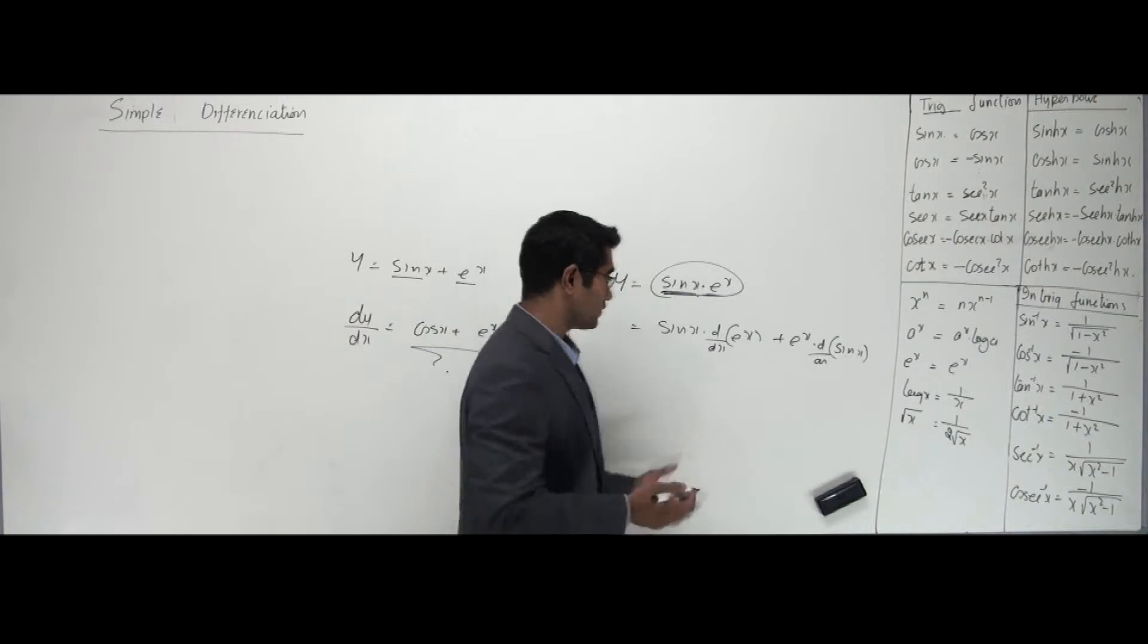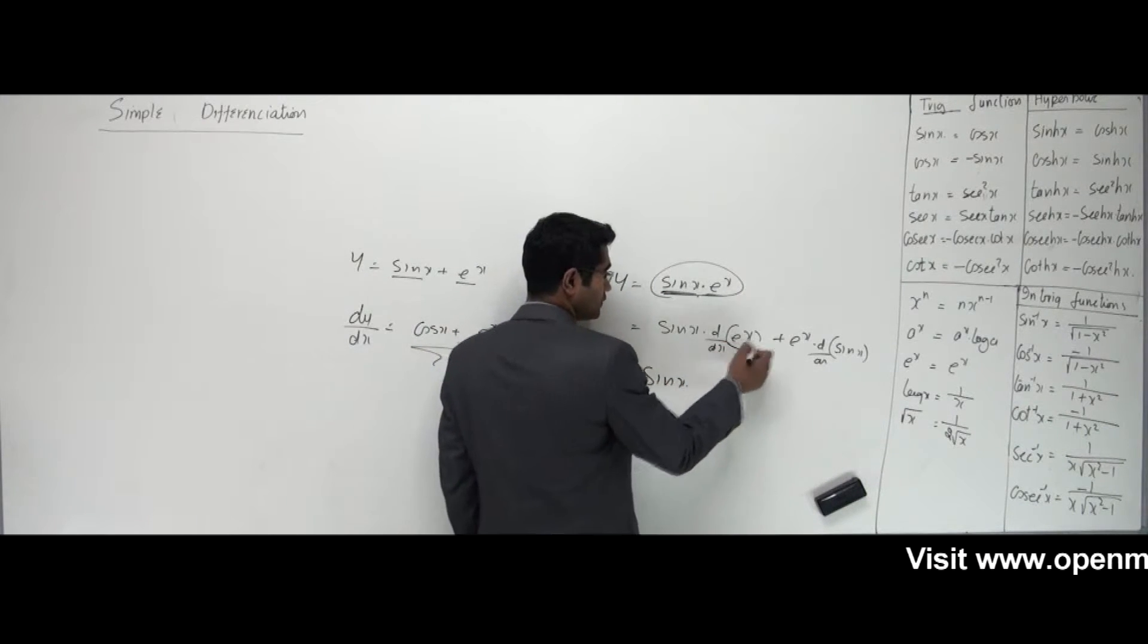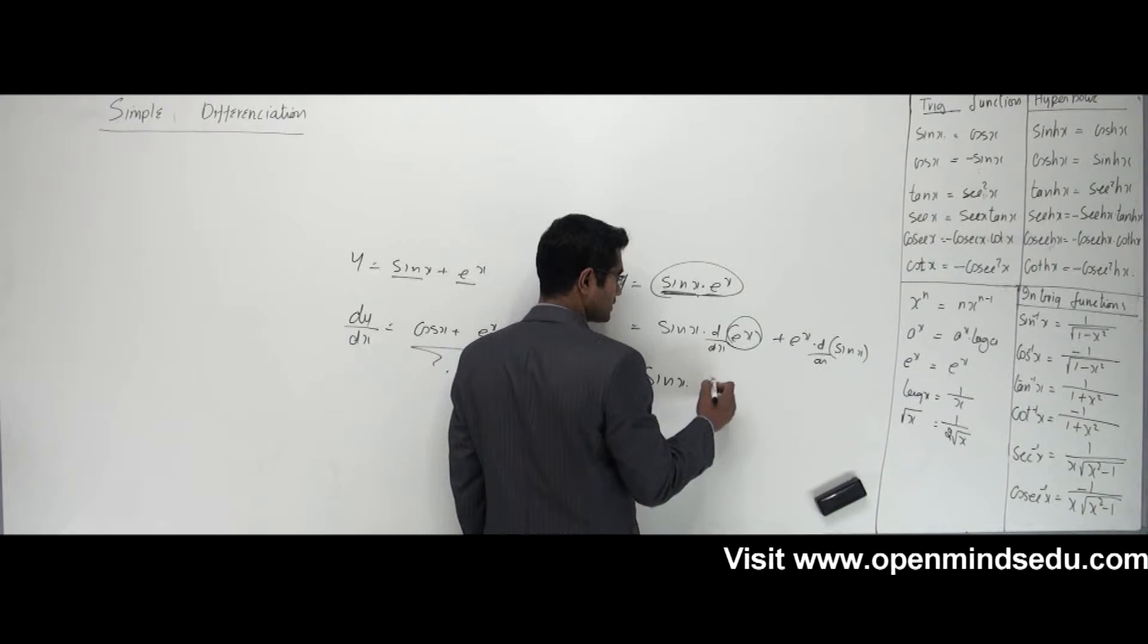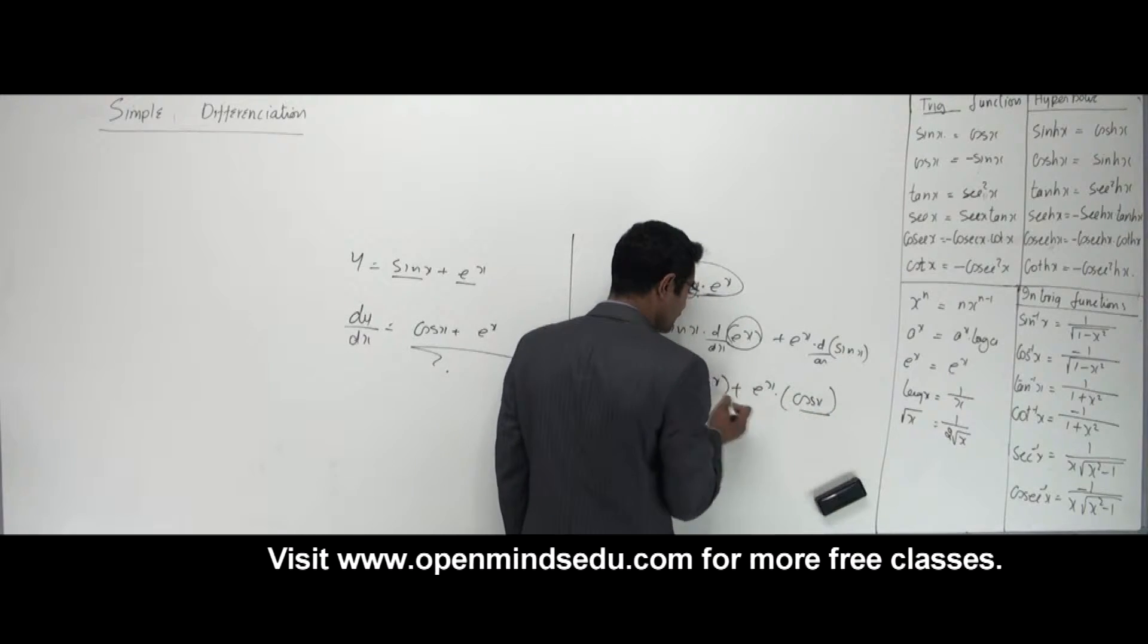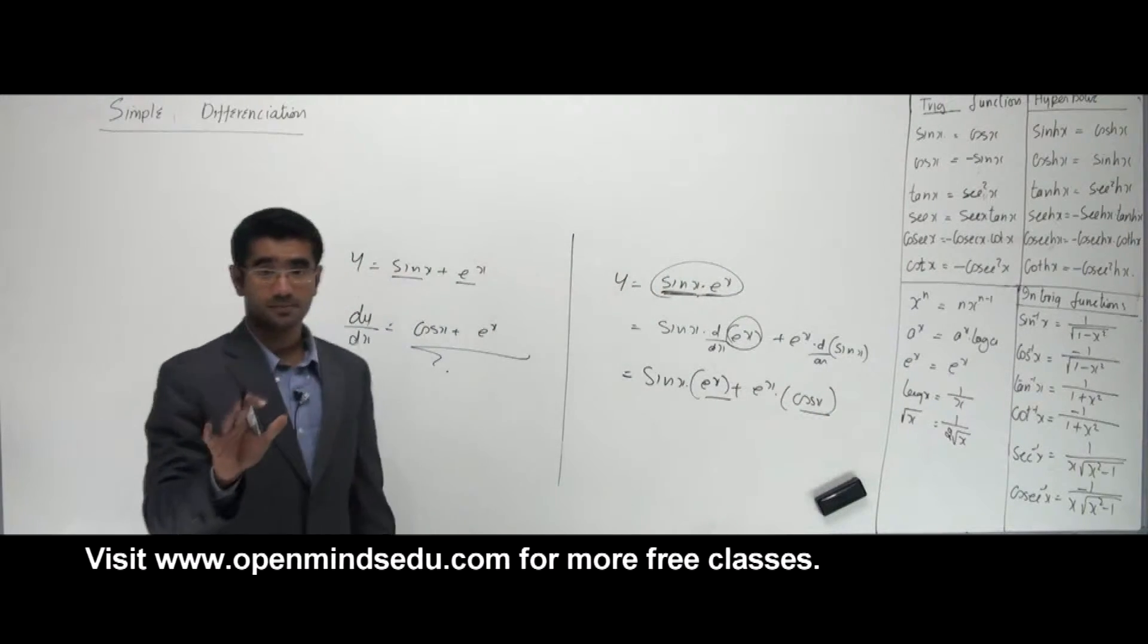So if at all I have to complete the problem, you know differentiation of e power x is what? E power x itself. Plus e power x into differentiation of sin x is what? Cos x. So basically I differentiated one function only. So it can be more complicated like this.